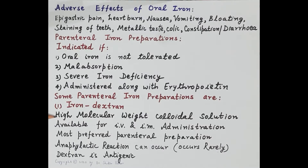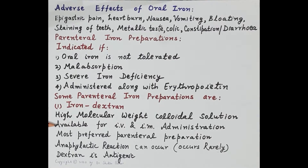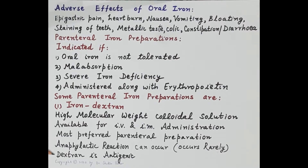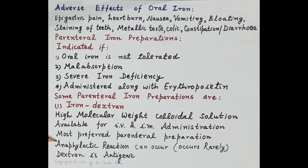Iron dextran is a high molecular weight colloidal solution containing 50 mg of elemental iron per mL. It is the only parenteral iron preparation that can be injected both intravenously and intramuscularly, making it the most preferred parenteral preparation. Since dextran is antigenic, anaphylactic reactions can occur, but the frequency is rare.